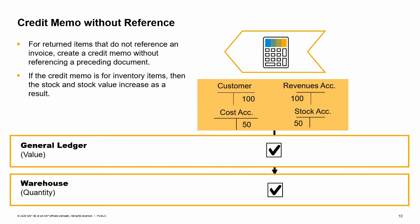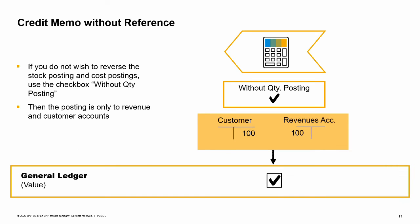When a customer returns items that do not refer to a specific invoice, you can post this quantity directly to the warehouse without referencing a preceding document. If the credit memo is for inventory items, then the stock and stock value increase as a result. If you do not wish to reverse the stock posting and cost postings, you have the option to use the checkbox without quantity posting to eliminate the goods movement. Then the only posting is to reverse the postings to revenue and customer accounts.